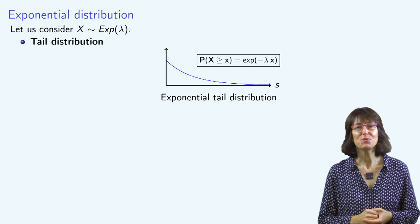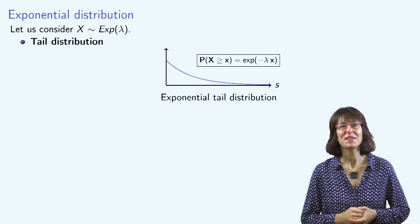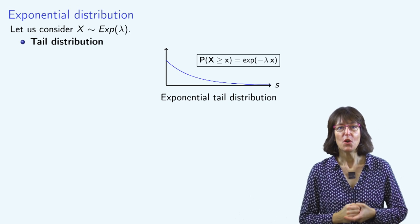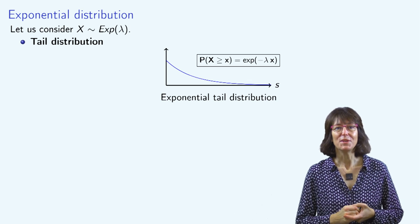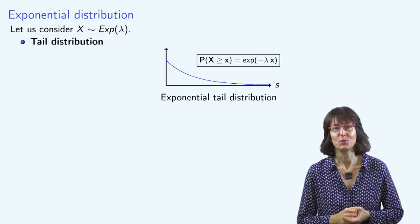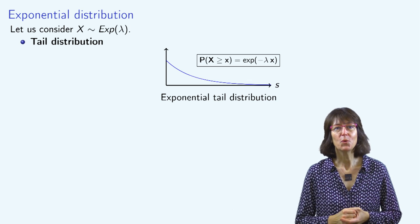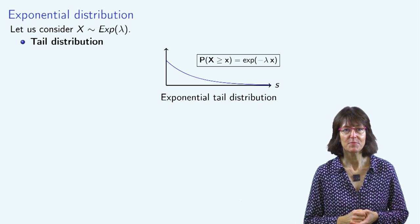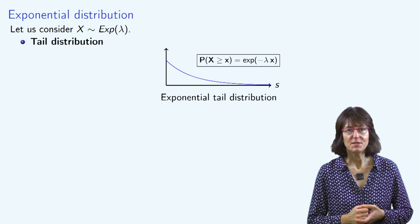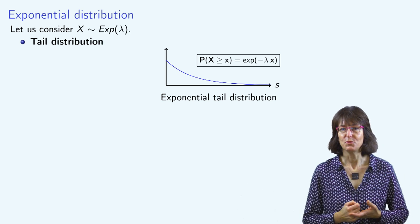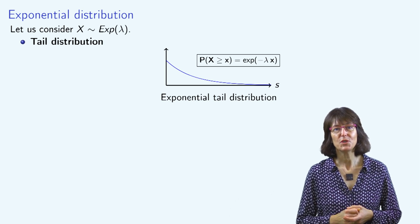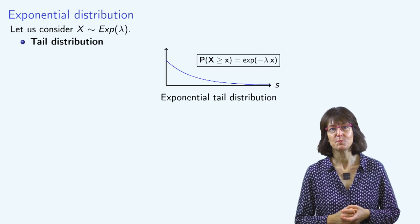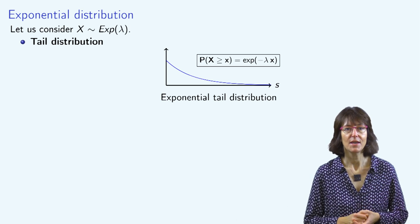Let's remember a few results about the exponential distribution. We'll assume that the random variable x is distributed according to the exponential law with parameter lambda. This means that the probability that x is greater than a threshold small x equals exponential of minus lambda x.